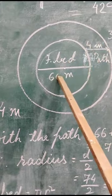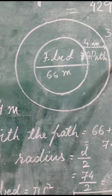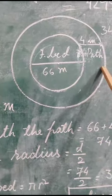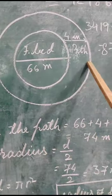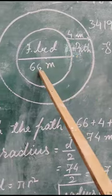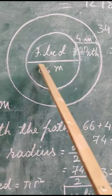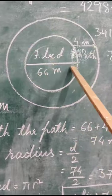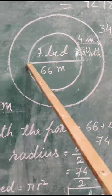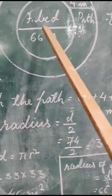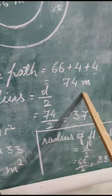So first of all, we don't know the radius of this whole area, this bigger circle. But we know the width and we know the diameter of the flower bed. So what will be the diameter of the bigger circle? 66 plus 4 plus 4. Both sides—the width will be added to this diameter. So it will be 74 meters.